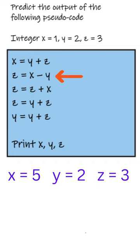In the second line we have to perform z equals to x minus y. x contains 5 and y contains 2. The result is 3 which will be stored in z. And z now will contain the same value 3.